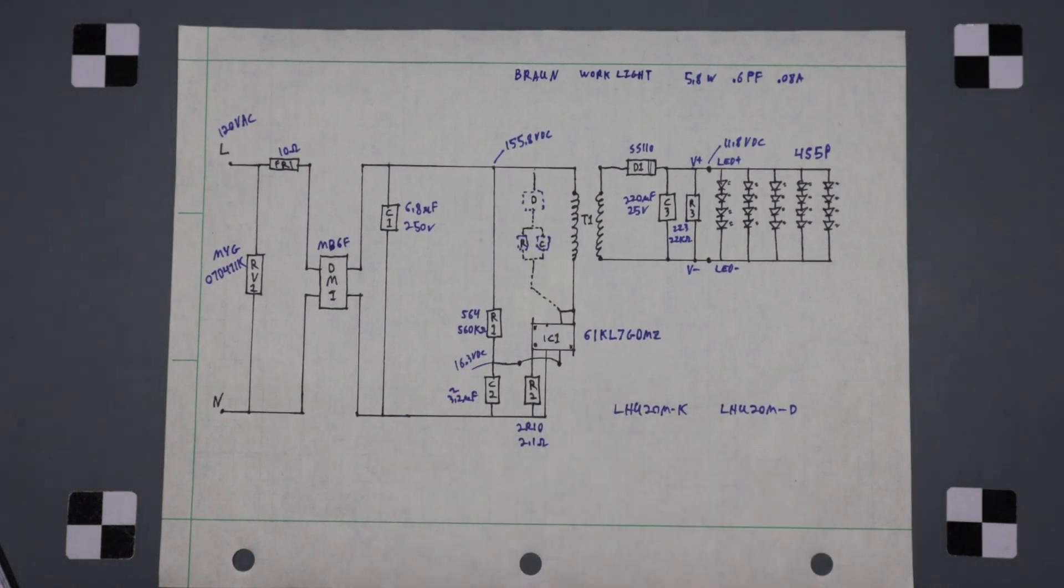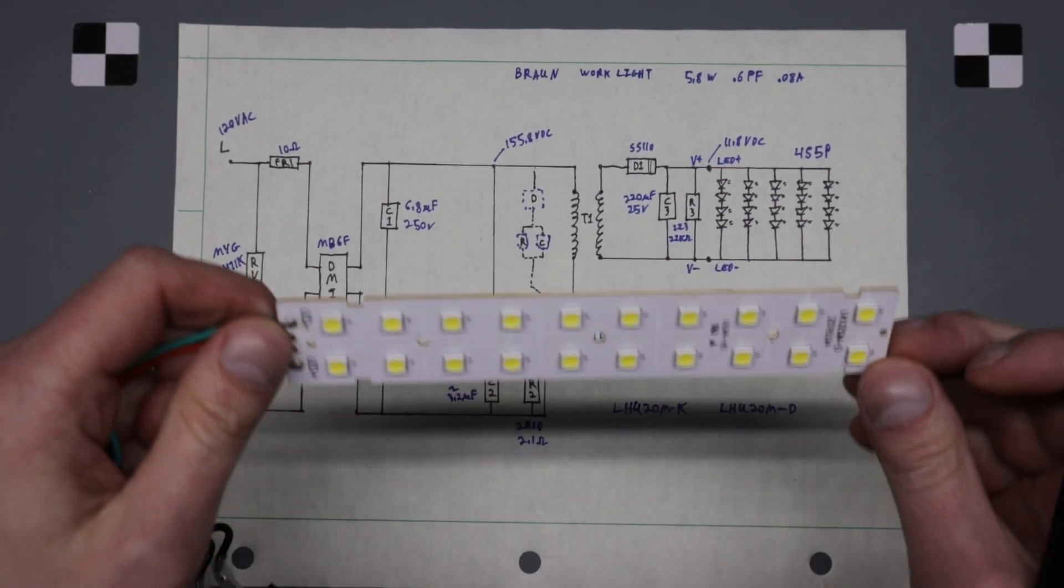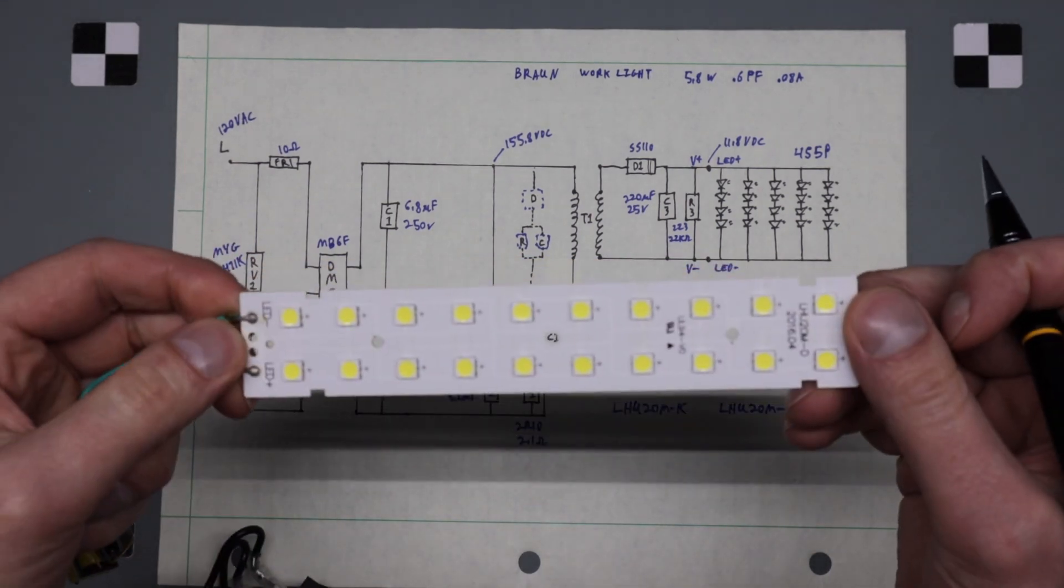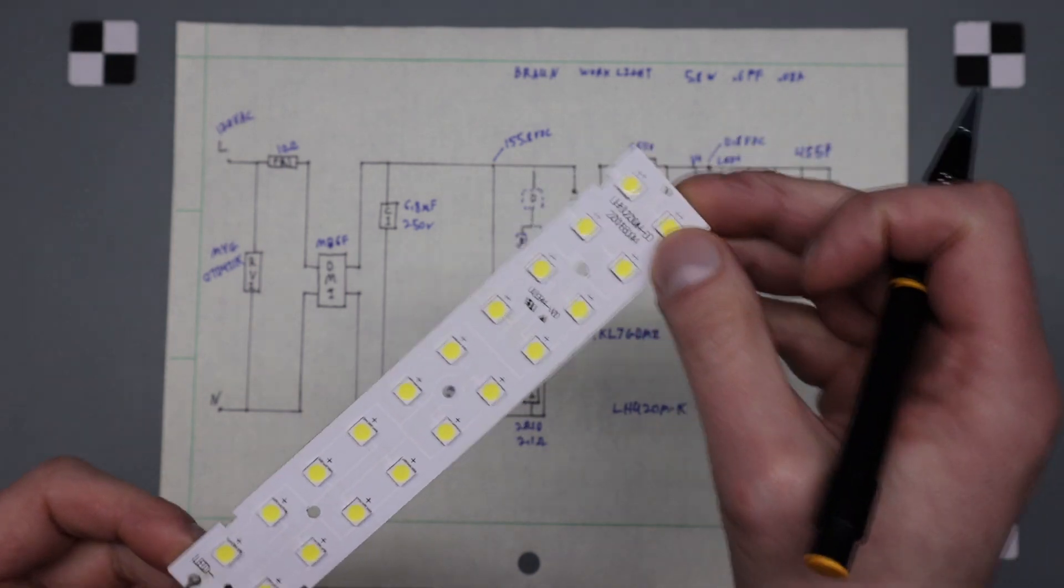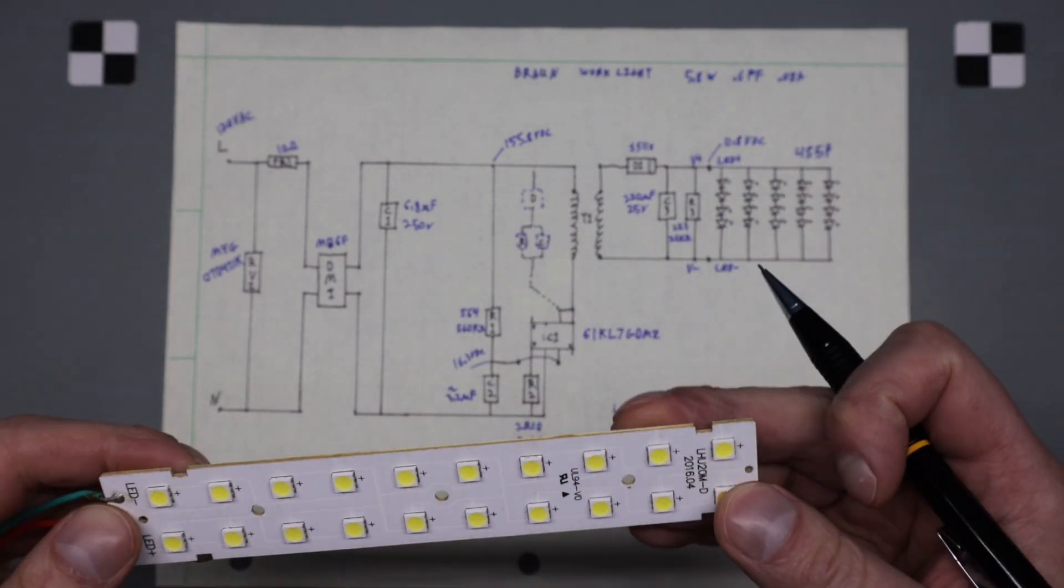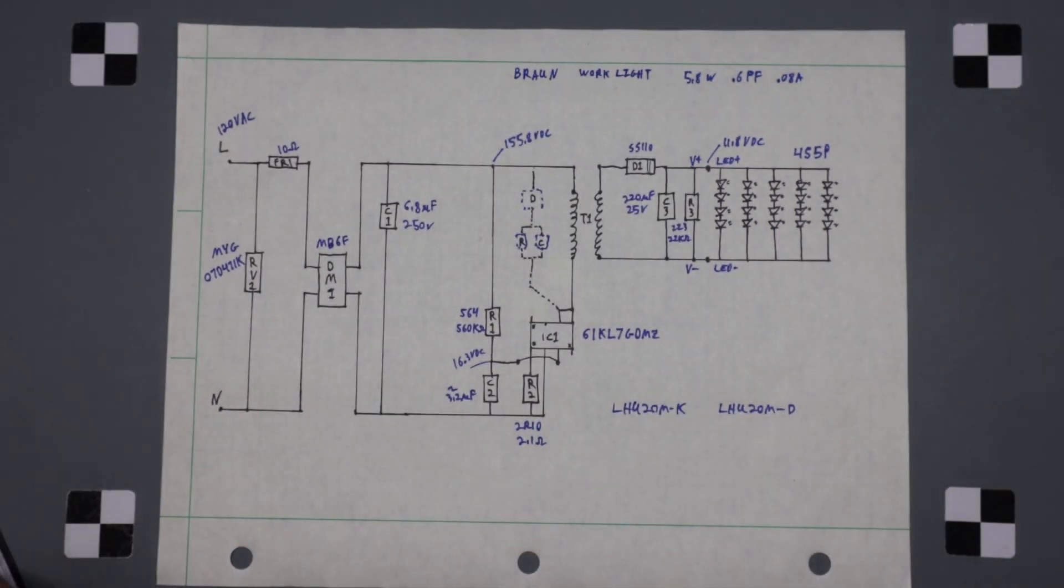Okay, so the other thing I noticed when I was taking it apart is that this is a PCB, it's not aluminum. So it's made back in 2016. Really wasn't giving off a lot of heat when I had it on. Okay, all the parts will be down in the description below. If you have any questions or comments, leave them in the comments below.